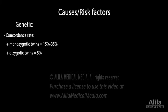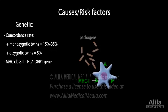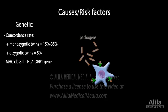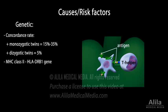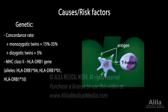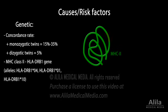Rheumatoid arthritis has a significant genetic factor. The susceptibility to the disease has been associated with a number of genes, in particular those that encode Class II Major Histocompatibility Complex, MHC. MHC Class II molecules play an important role in antigen recognition, displaying pieces of pathogens and presenting them as antigens to T helper cells, a crucial step in activation of T cells. Several variations of MHC II have been linked to increased risk for rheumatoid arthritis. These variations share a common sequence of five amino acids called the shared epitope, which is thought to bind tightly to some self-antigens, causing erroneous activation of T cells.